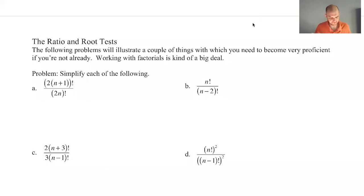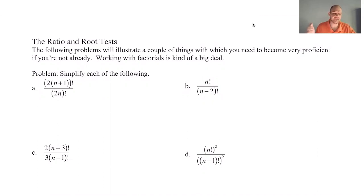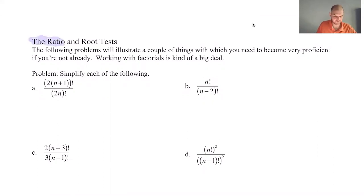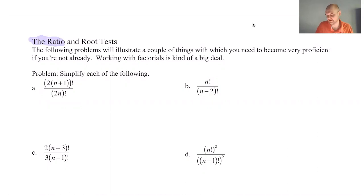We're on page one of note seven of Calc C, talking about testing series for convergence or divergence. In this set of notes, we're going to talk about the ratio test, which is by far my favorite test to use, and also the root test, which is like its sibling — a stronger test, but I don't like to use it as much because I don't like taking limits of nth roots quite so much.